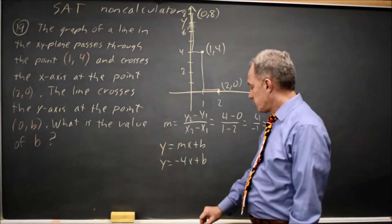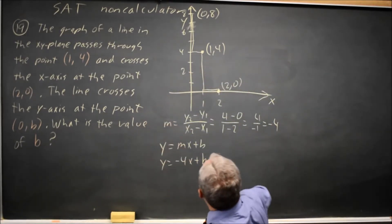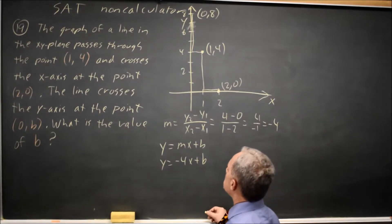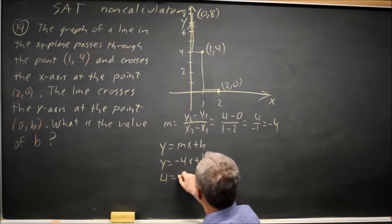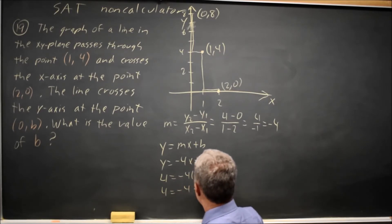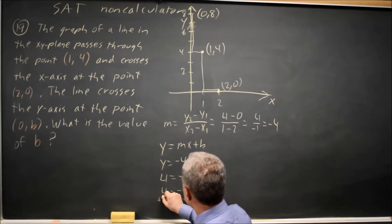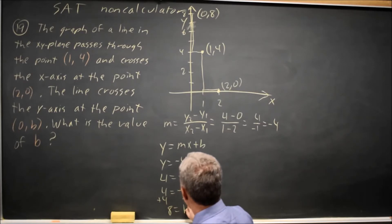The value they're asking for in this question. If I substitute in x equals 1, y equals 4, I get 4 equals negative 4 times 1 plus b. 4 equals negative 4 plus b. Add 4 to each side and I get 8 equals b.